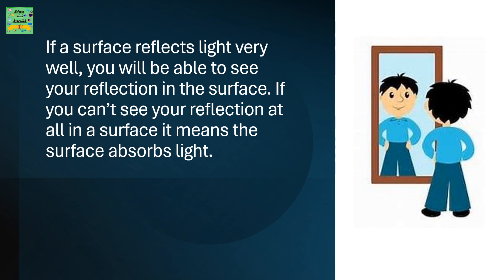If a surface reflects light very well, you will be able to see your reflection in the surface. If you can't see your reflection at all in a surface, it means that the surface absorbs light too much.